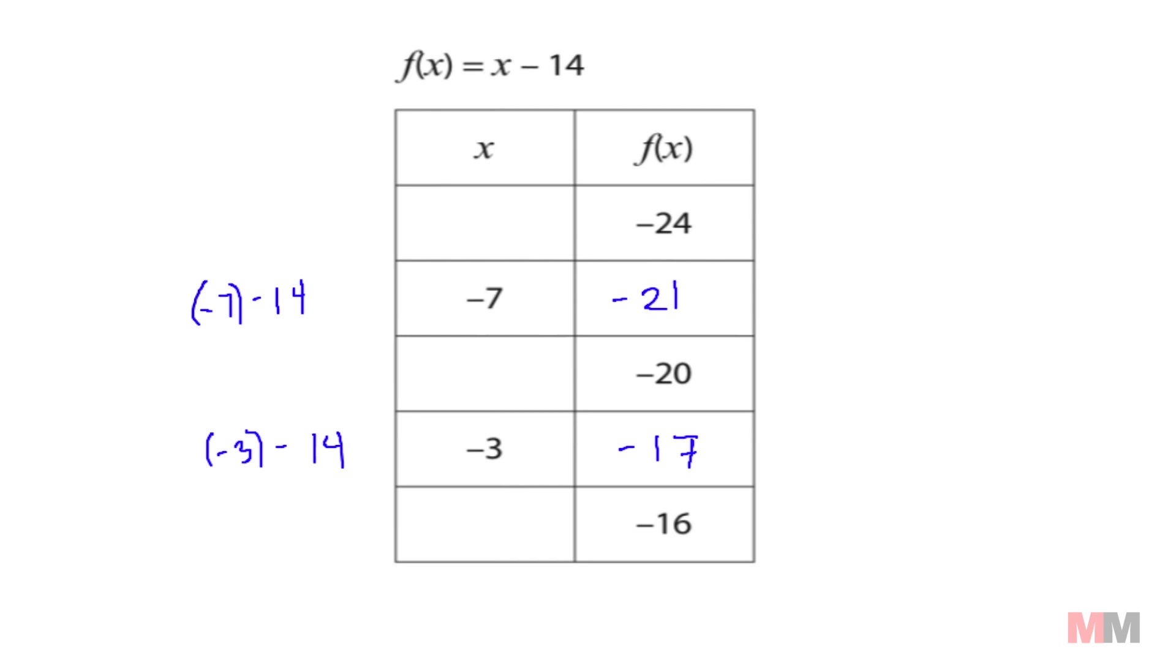When you're given the output, when you're given these numbers and you're trying to get x, it involves you setting up some kind of equation. So replace f of x, the whole thing. You're not plugging this in. Once again, you can set it up by writing an equation, negative 24 equals x minus 14, and then you just solve for x. Add 14 to both sides. And negative 24 plus 14 is negative 10 equals x.